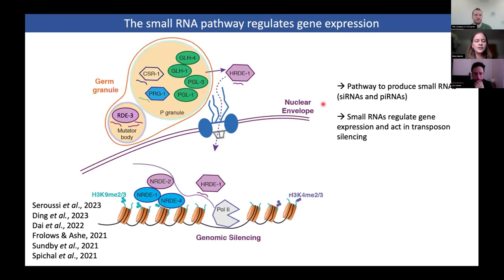The small RNA pathway is necessary to regulate gene expression. As soon as an RNA is transcribed in the nucleus and exported, it will land in a structure called the germ granule. It will then be scanned by different Argonaute proteins like PRT1 and CSR1 that bind to small RNAs and will decide if the RNA gets translated or silenced. If the RNA is silenced, it will go into a substructure of the germ granule, also called the mutator body.